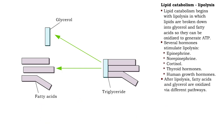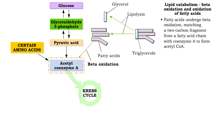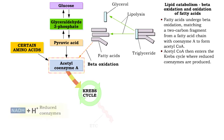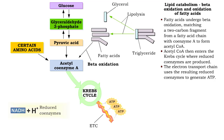After lipolysis, fatty acids and glycerol are oxidized in different ways. Fatty acids undergo beta-oxidation, a series of reactions that form acetyl coenzyme A from a two-carbon fragment of a fatty acid chain and coenzyme A. The acetyl coenzyme A then enters the Krebs cycle, which produces reduced coenzymes that are used to generate ATP in the electron transport chain.